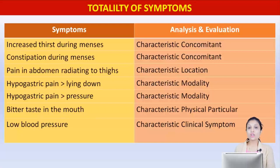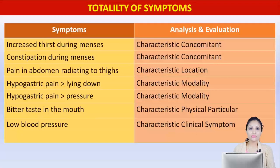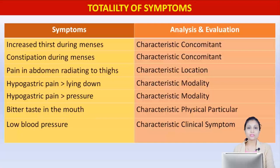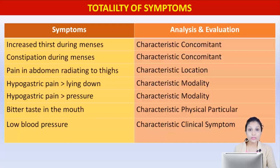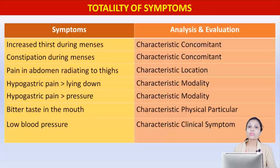The next symptom is location — a radiating kind of pain. Pain in the abdomen that radiates to the thighs. If we try to understand physiologically, the pain felt during menses is actually in the uterus, but the referred pain is felt in the lower abdomen and back. What it does not explain is the pain that radiates to the thighs, which is why we have taken this symptom as characteristic.